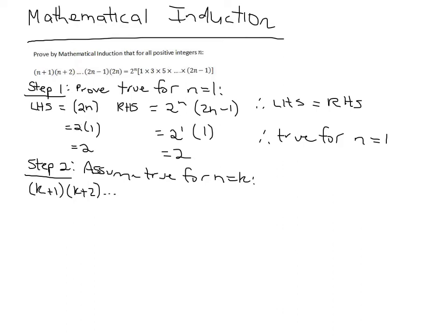2k minus 1, 2k equals 2 to the k, 1 times 3 times 5 times 2k minus 1.